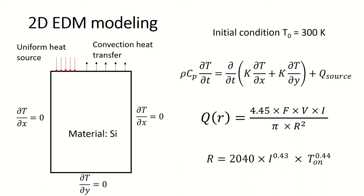Hello everyone, today we are going to create a 2D electro discharge machining model in Abaqus. We have created a 2D model in which the top surface is considered as a heat input and all other boundaries are considered as insulated. The top boundary is divided into two parts: one is the uniform heat source in the top left corner to some distance, and the remaining top surface is considered as convection heat transfer.